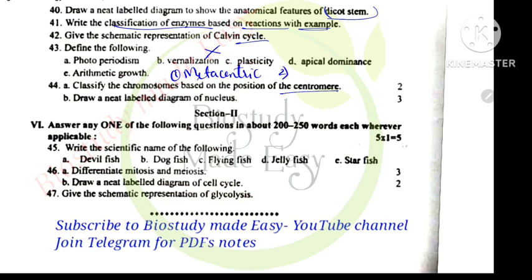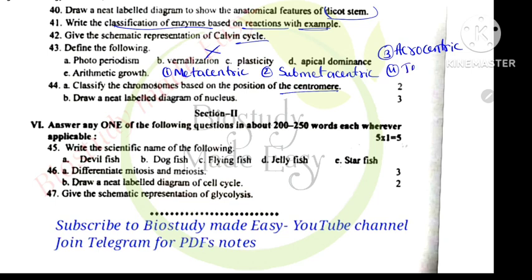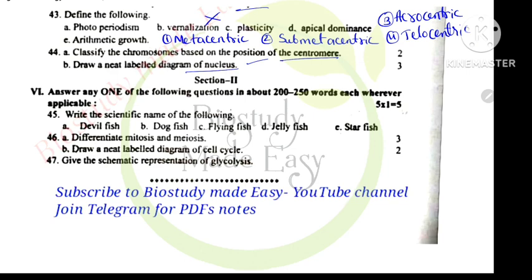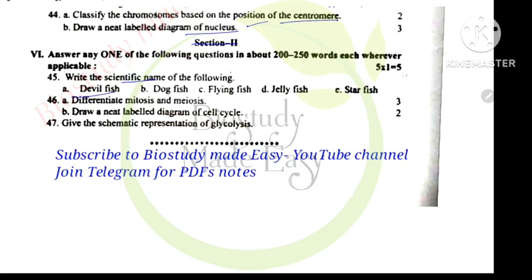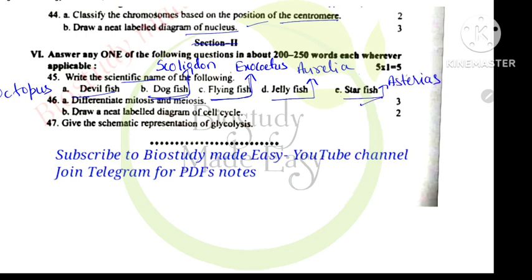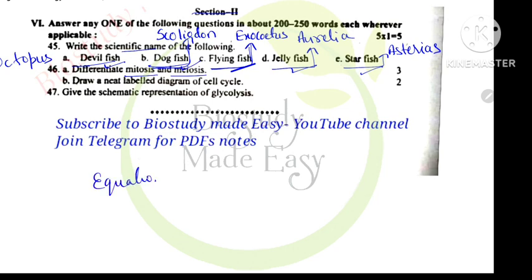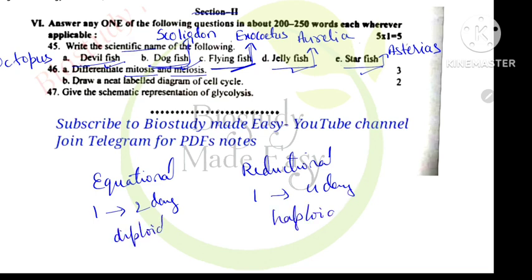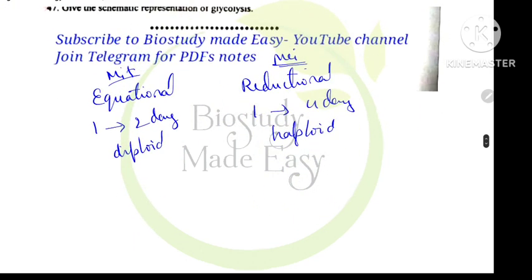Next, diagram of nucleus. Scientific names: devilfish is Octopus, a mollusca. Dogfish is Scoliodon. Flying fish is Exocoetus. Starfish is Asterias, an echinoderm. Jellyfish is Aurelia, a cnidarian. Difference between mitosis and meiosis. Mitosis is equational division, one cell into 2 daughter cells. Meiosis is reductional division, one cell into 4 daughter cells. Diploid cells in mitosis, haploid cells in meiosis. Mitosis for growth in somatic cells, meiosis for gamete formation in germ cells.